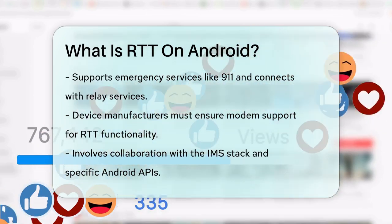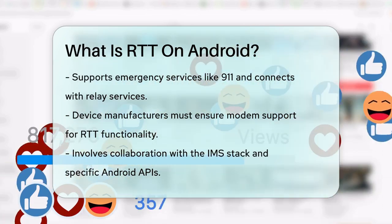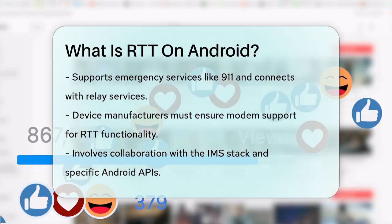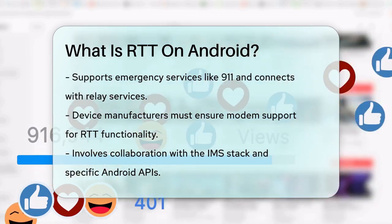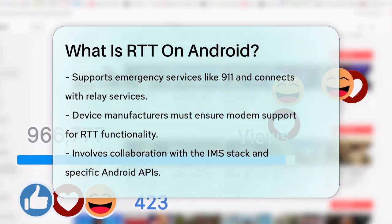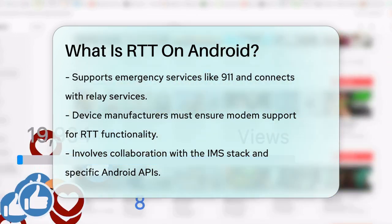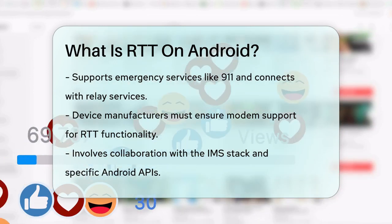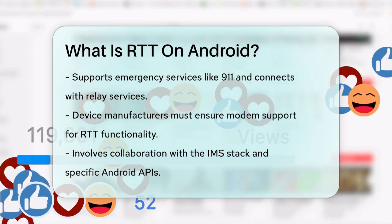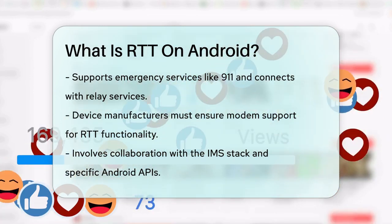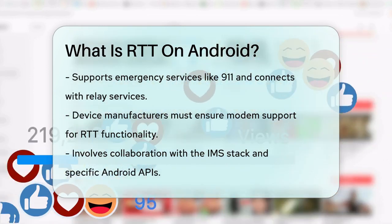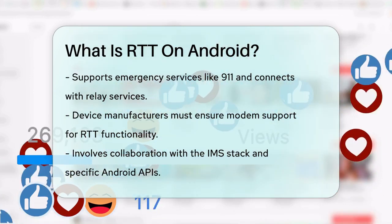In summary, RTT on Android is a powerful accessibility feature that makes real-time text communication possible, enhancing the way people with hearing or speech difficulties can interact over the phone.